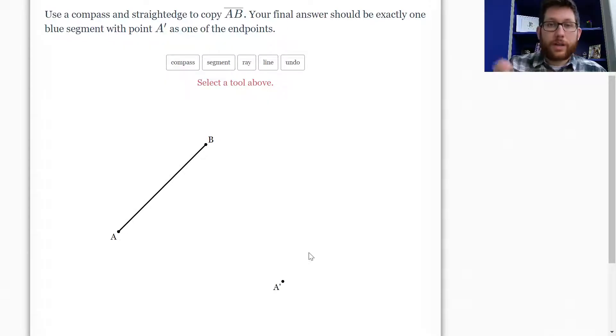Because we could measure it, and we could make a congruent segment that way, but we want to do it using only something that makes circles and only something that makes lines, not necessarily something that measures. So we're not really doing a lot of measuring. We're just doing a lot of circles and constructions of lines.